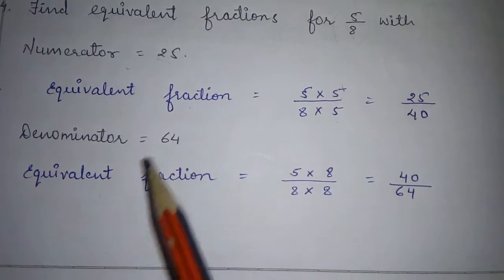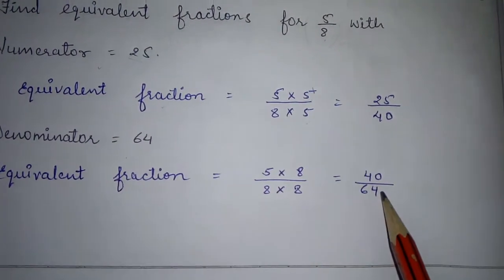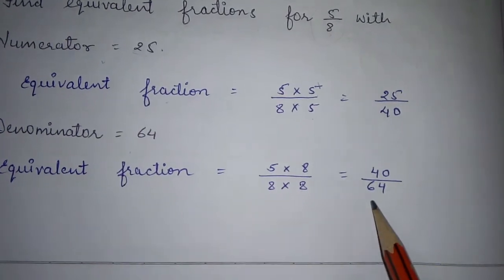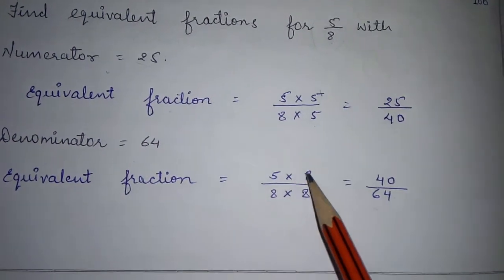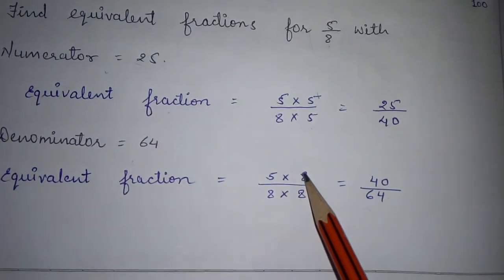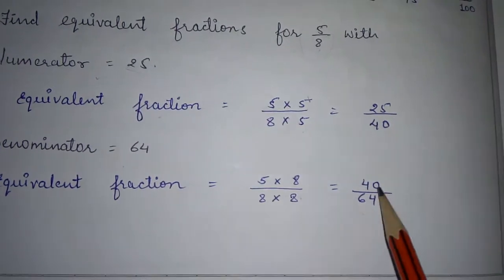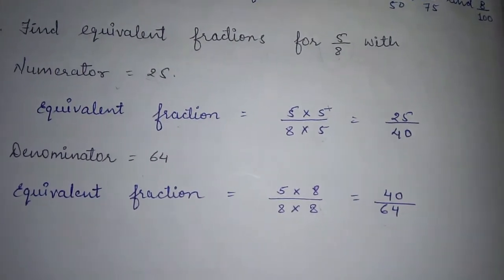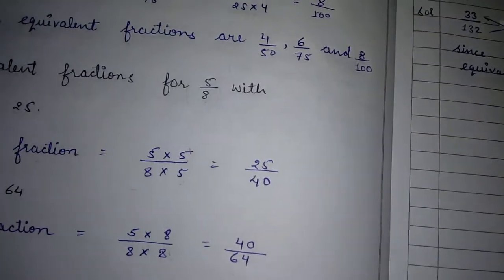Isi tarike se denominator 64 ka kya hoga? 8×8=64, to aapne 8 ka multiply kiya. To numerator mein bhi 8 ka multiply karenge: 5×8=40. So our equivalent fraction is 40 by 64. Isi tarike se aapko yeh solve karna hai.